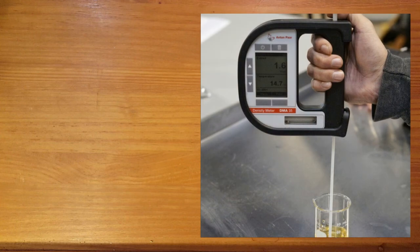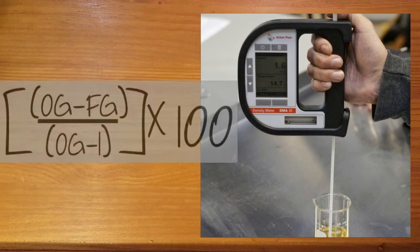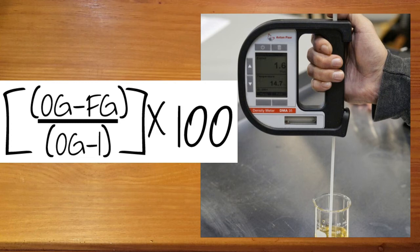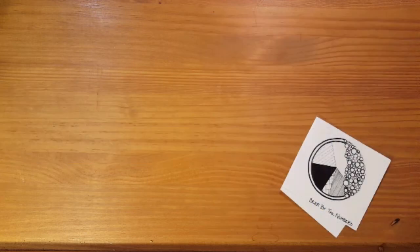The brewer will now take a final gravity reading, which, along with their original gravity reading and a handy formula, can be used to calculate attenuation, which also gives the brewer an idea of a very important aspect of the beer, alcohol by volume. However, this is only a close approximation to the true attenuation of the beer.